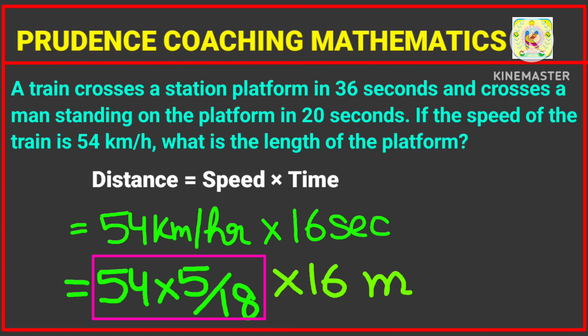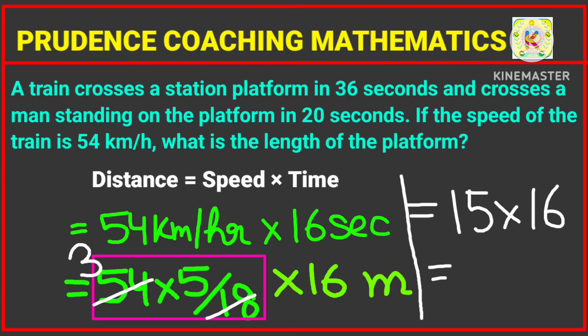To convert from kilometers per hour to meters per second, multiply by 5/18. So 54 multiplied by 5/18: since 54 divided by 18 equals 3, we get 3 multiplied by 5 equals 15 meters per second. Then 15 meters per second multiplied by 16 seconds gives 240 meters. So the length of the platform is 240 meters.